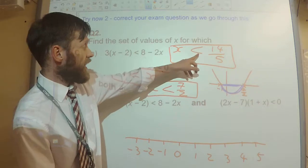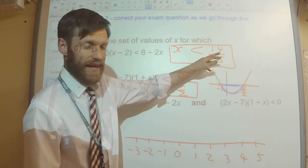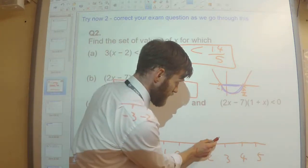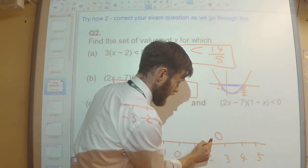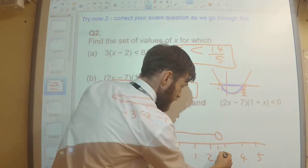Right. So I know x needs to be less than 14 over 5, which is about 2.8. Well, it is 2.8. So that's going to be roughly about here. So here, x is going to be less than the 14 over 5 there.